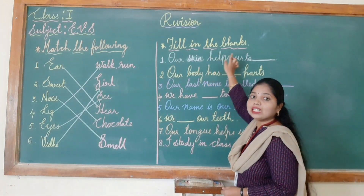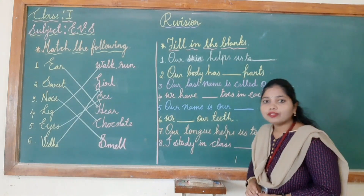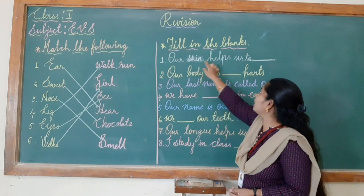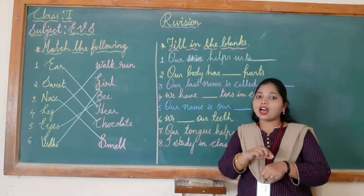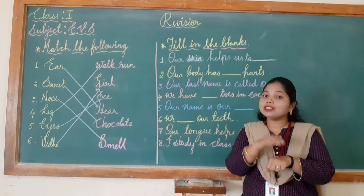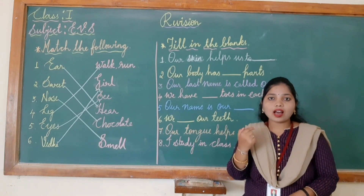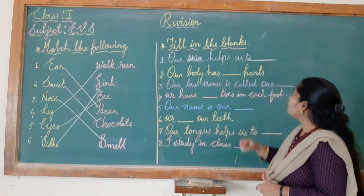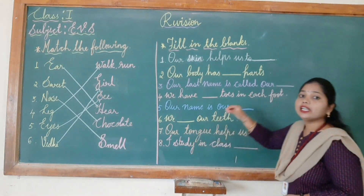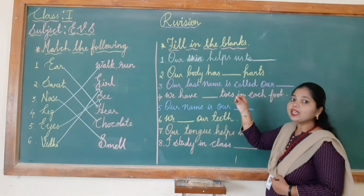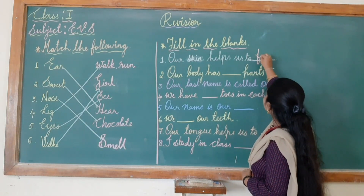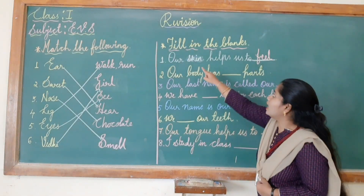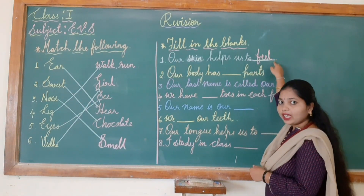The next part is filling the blanks. First question: our skin helps us to dash. Children, our skin helps us to feel. So I will write 'feel' here. The spelling is F-E-E-L. Our skin helps us to feel.